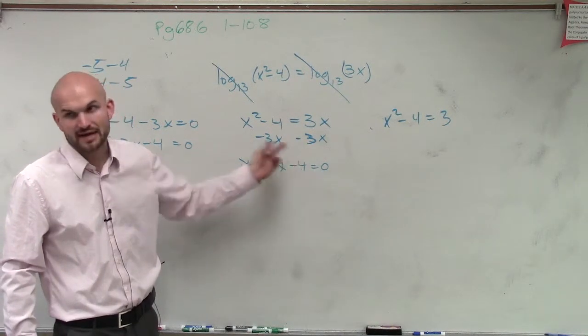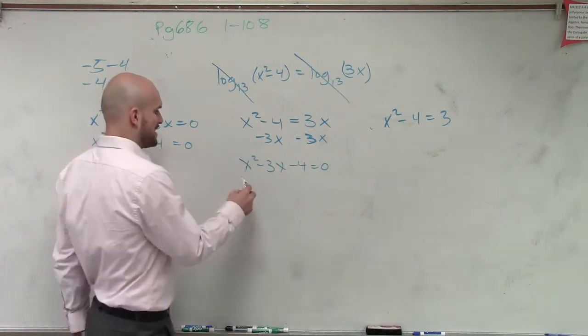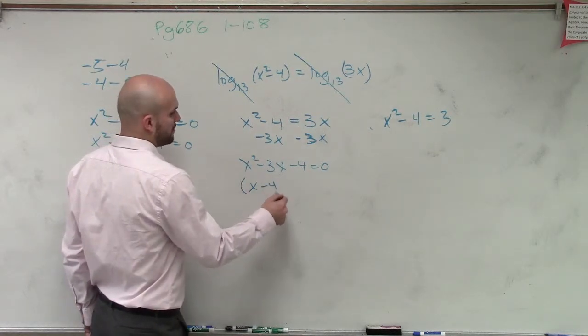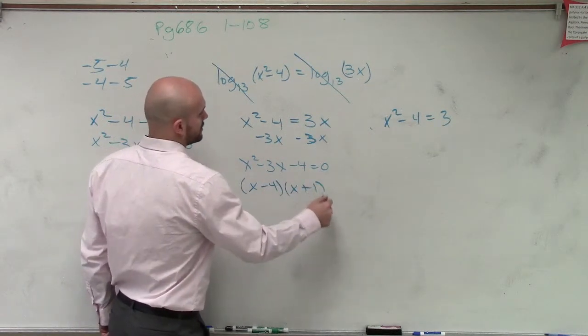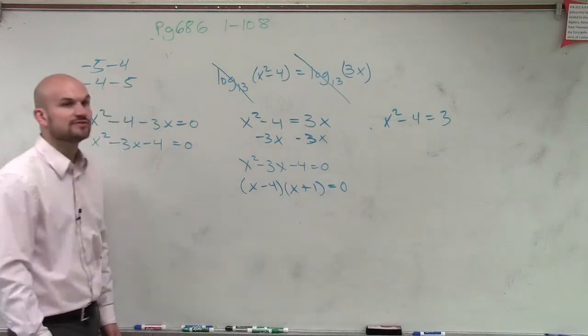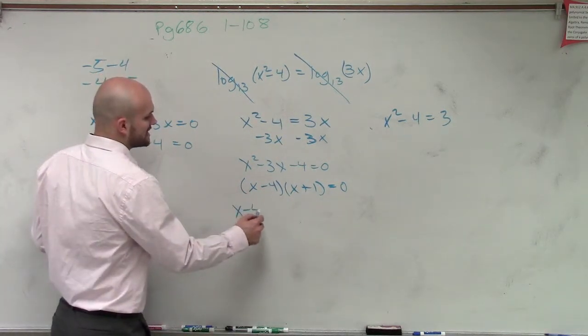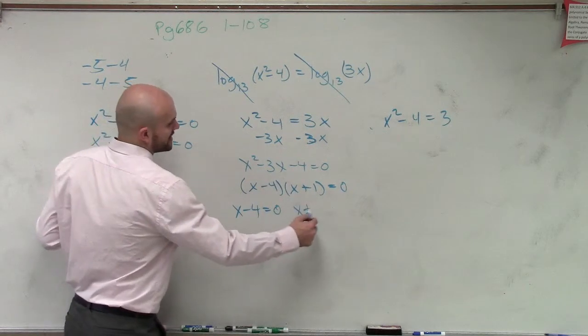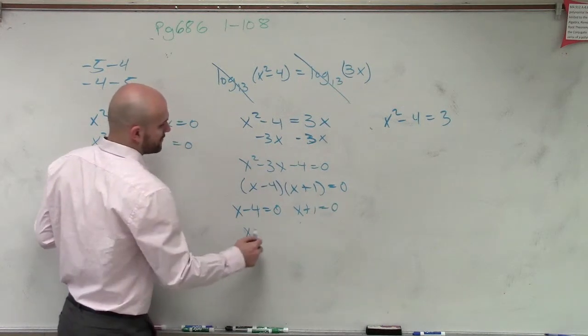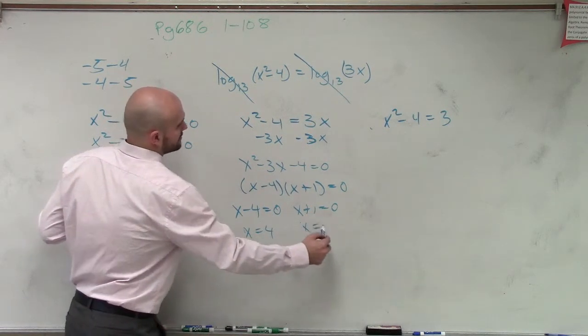So let's start off by factoring. What two numbers multiply to give you negative 7, add to give you negative 3? We can factor this to x minus 4 times x plus 1 equals 0. And the reason why we like using factoring is because now I can apply the zero product property, which states x minus 4 has to equal 0, and x plus 1 has to equal 0. So therefore, x equals 4, and x equals negative 1.